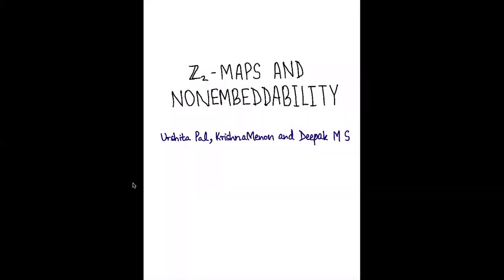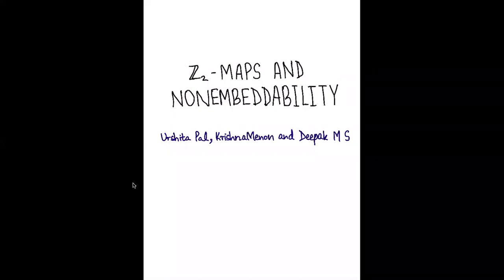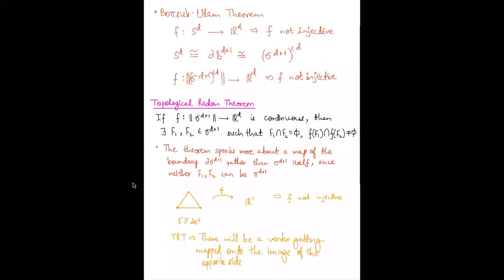In this presentation, we'll be looking at Z2 maps, what they are, and how they can give some reformulation and some proof for some non-embeddability results. We'll be looking at two main results, and I'll briefly describe one of them now.